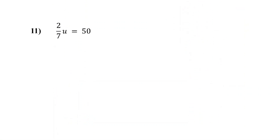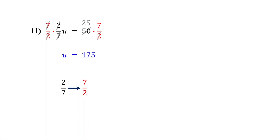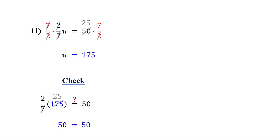Now what if the variable is multiplied by a fraction? Here, u is multiplied by 2/7. To get u by itself, we could divide both sides by 2/7, but that would complicate the calculation. Instead, we multiply by the reciprocal of 2/7. To find the reciprocal of a fraction, you just flip it — so the reciprocal of 2/7 is 7/2. Now multiply both sides by 7/2. The product of a fraction and its reciprocal is always 1, so on the left the fractions cancel out, leaving u by itself. On the right, 50 and 2 reduce to 25, then 25 times 7 is 175. Therefore, the solution is u equals 175. To check, plug in 175 for u: 175 and 7 reduce to 25, then 2 times 25 is 50, which matches the right side.